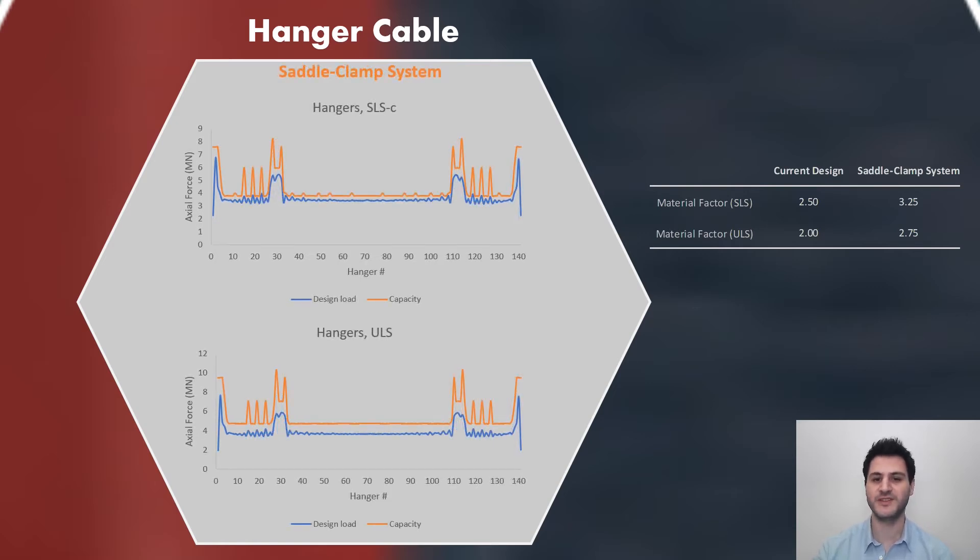Much higher partial material factors are adopted for transformed hanger cables. The first reason is to prevent cable rupture scenario. The second reason is related with the durability of special hangers since the continuity of main cable depends on it. Additionally, as the design life of special hangers should be the same with the main cables, they are not replaceable. So, safety margin is higher for release strands. For saddle clamp system, the hangers that are not replaced with release strands are kept same with the current design.